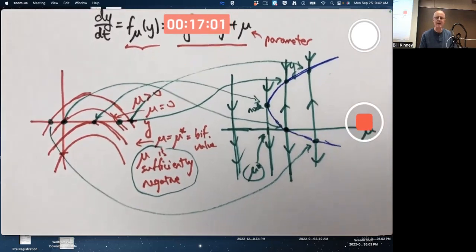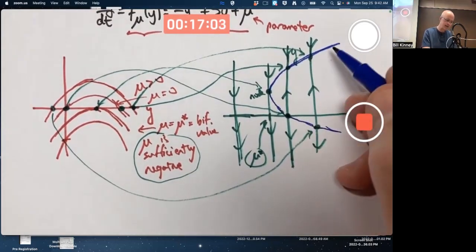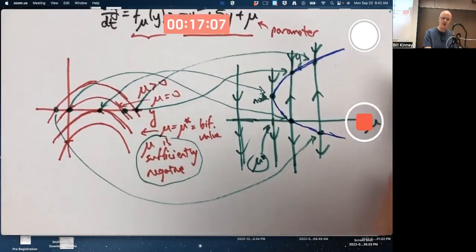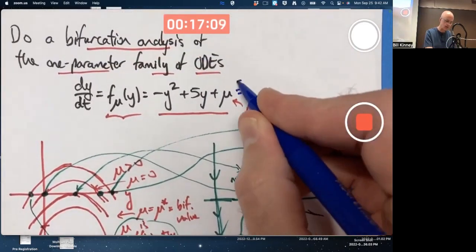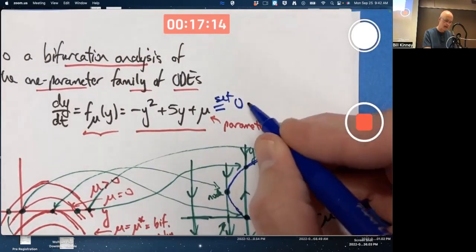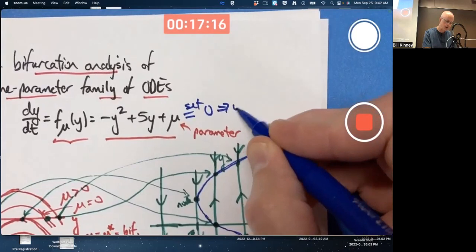How do you actually find the bifurcation value and how you actually find the curve of equilibria? You got to solve for y as a function of mu when you set this equal to zero, right? Because that's how you find equilibrium points. You set the right-hand side equal to zero and solve for y. And we need the quadratic formula.